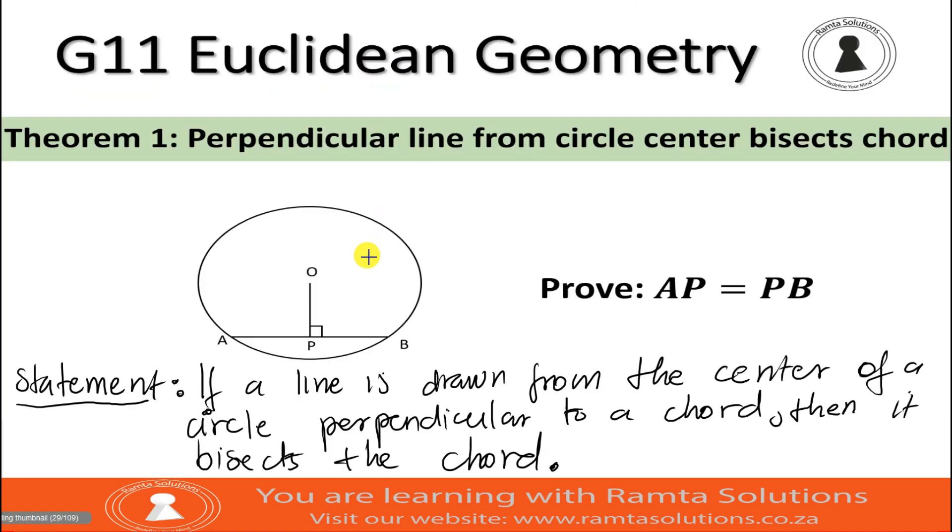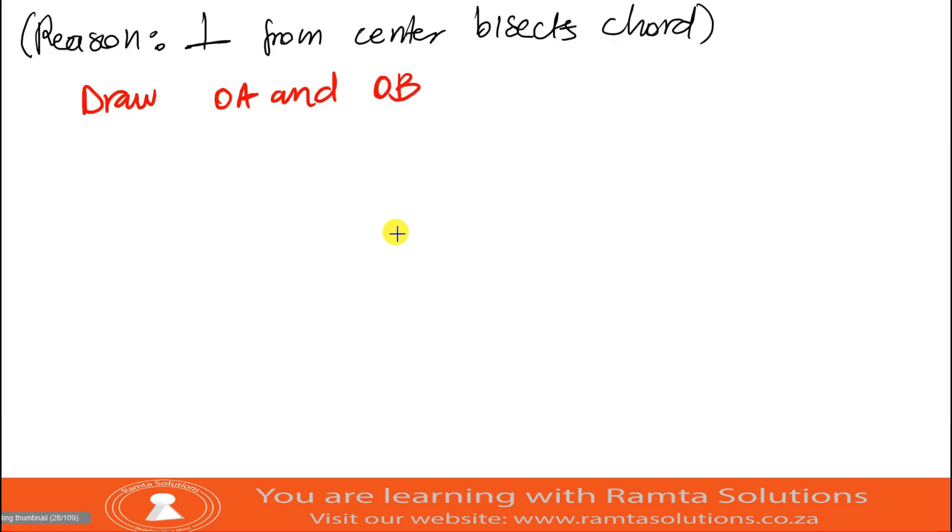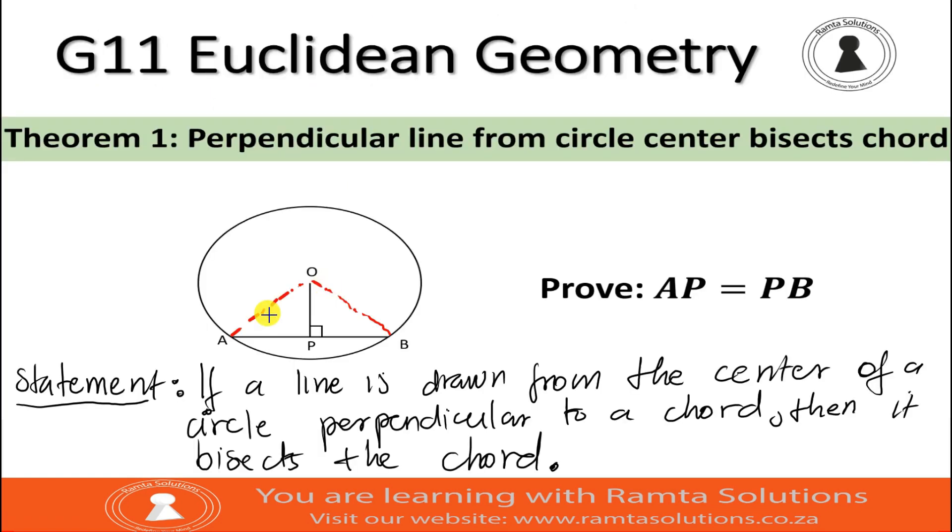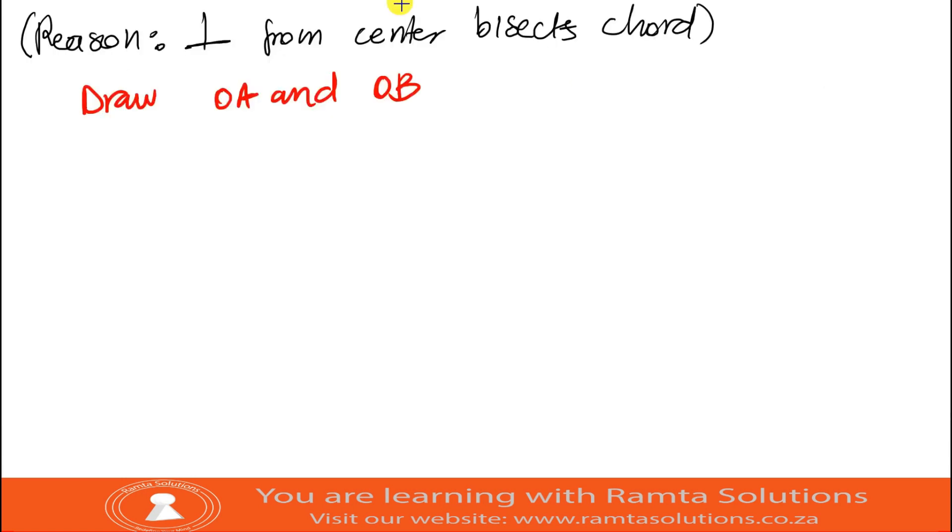I'm going to show you what I mean. This is OA, so I'm going to draw it. And then this is OB. This is how you draw it. Now, having drawn that, you can see that now you have two triangles. You have triangle OPA and triangle OPB.